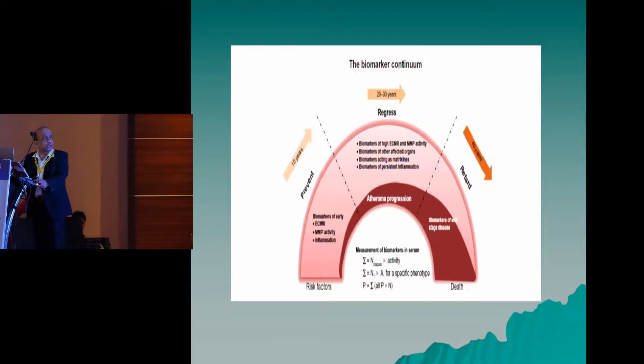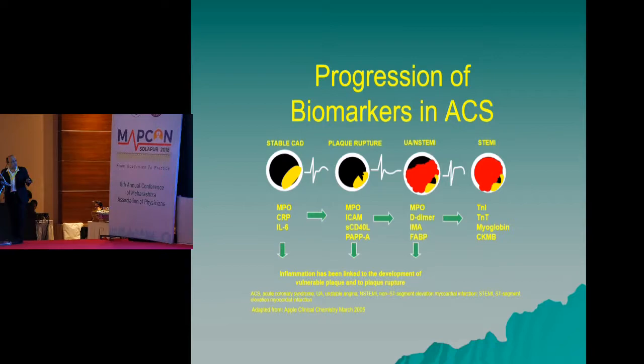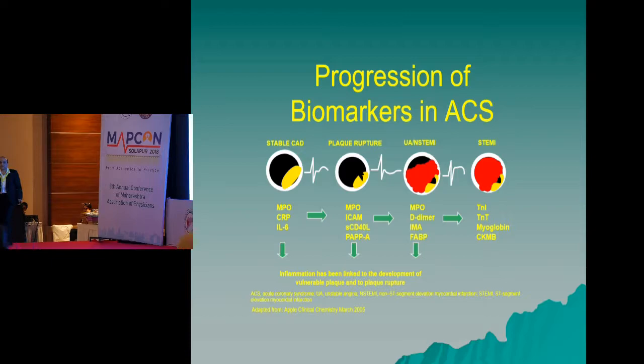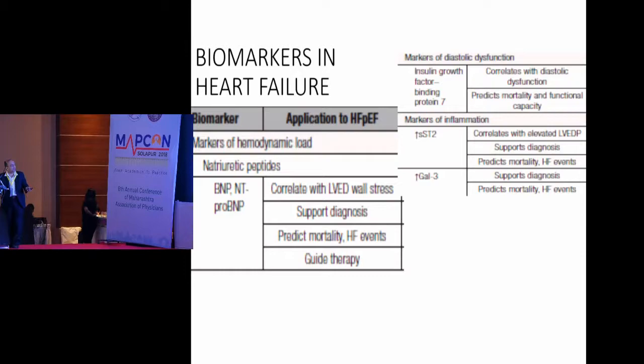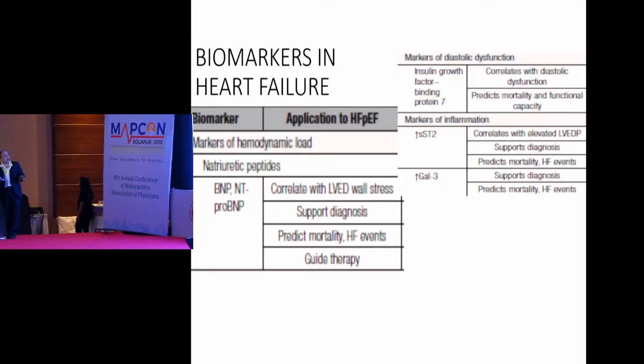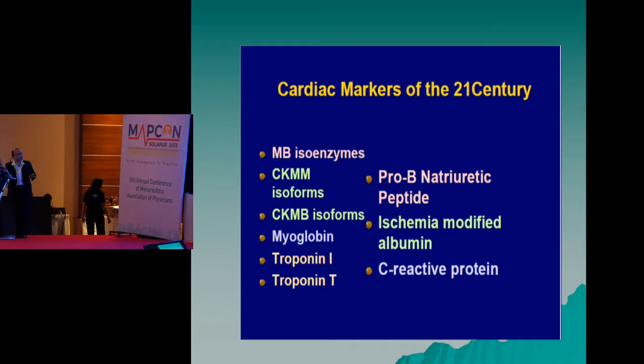At different stages of atherosclerosis, different biomarkers are available — myeloperoxidase, CRP, and others at early stages. When there is an event, troponin-T and troponin-I are available. In heart failure, the biomarkers include those measuring hemodynamic load — namely NT-proBNP and BNP — as well as other markers for inflammation and diastolic dysfunction.